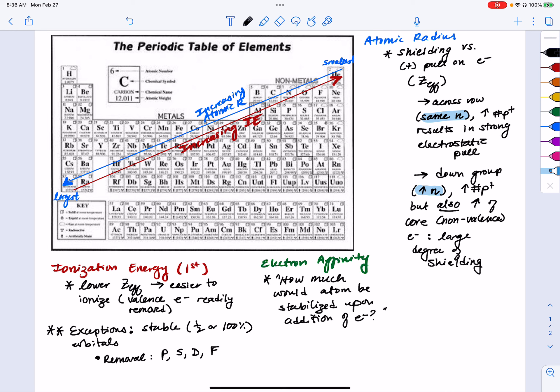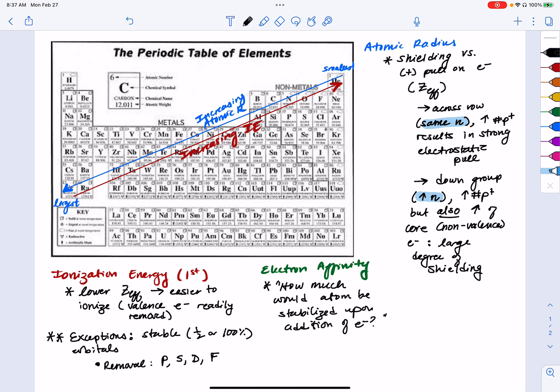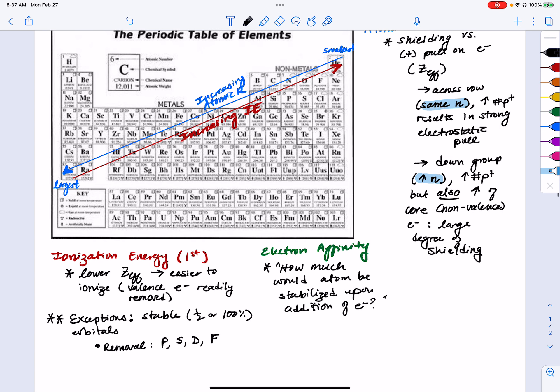And again, we've got to look at things like electron configuration, because we know that elements that are very close to octet or duet are going to be ones that are likely going to want to gain an electron, unless it's a metal, then they'll lose them. And we also need to watch out for our half-full orbitals.